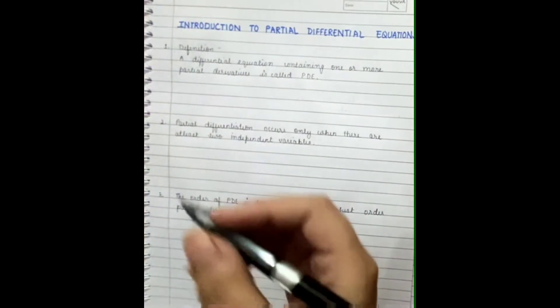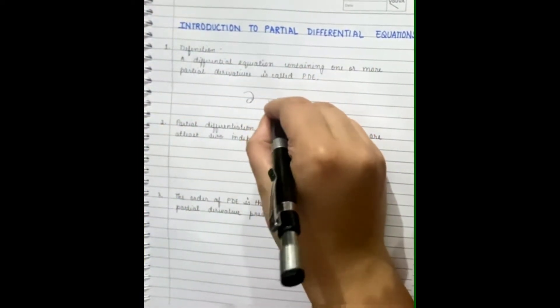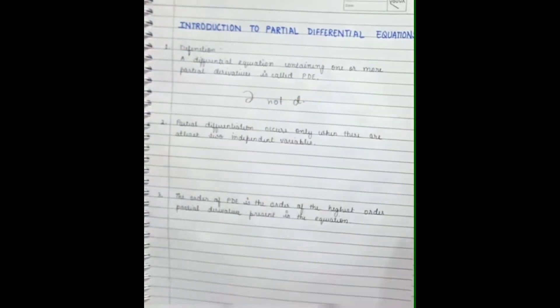It is denoted by the symbol del (∂) and not D, which is generally used for normal derivatives. Let's look at some basic information about PDE. Partial differential equations occur only when there are at least two or more independent variables.